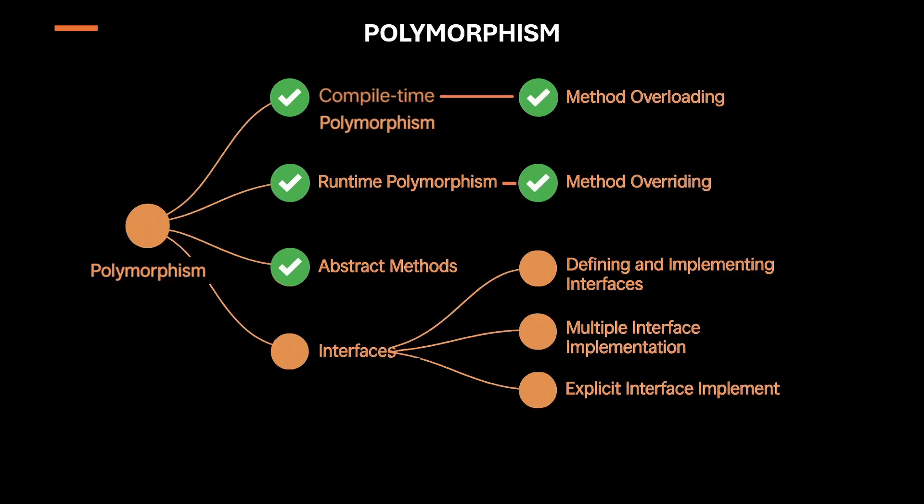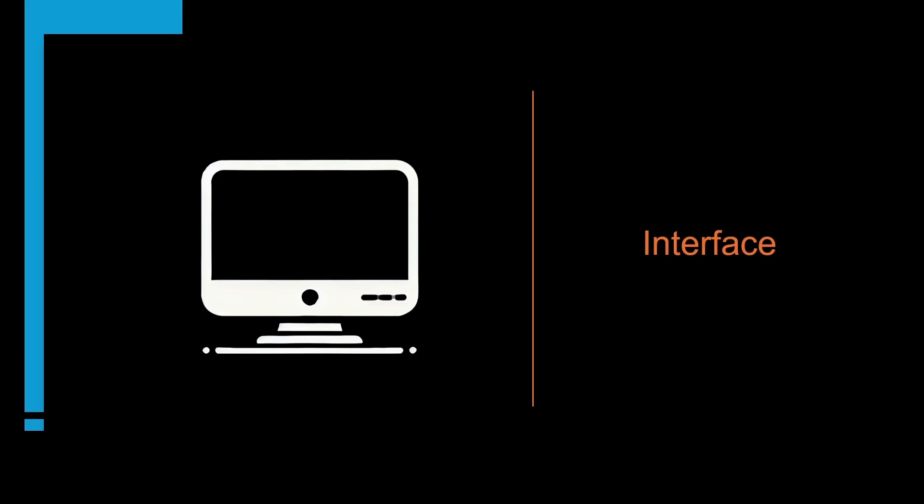Now let's get started with interfaces — how to define and implement them, how to implement multiple interfaces, and how to handle conflicts using explicit interface implementation. An interface is a contract: a blueprint that defines a set of methods or properties but does not provide the actual implementation. In simple terms, it tells you what needs to be done — the contract — but not how it should be done.